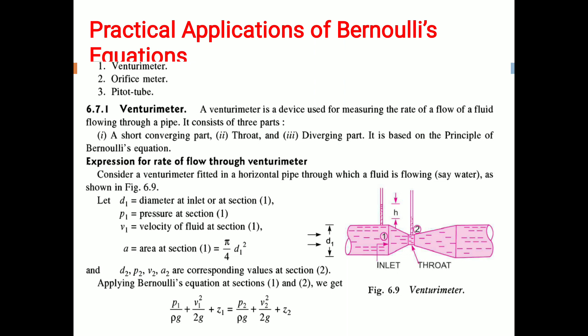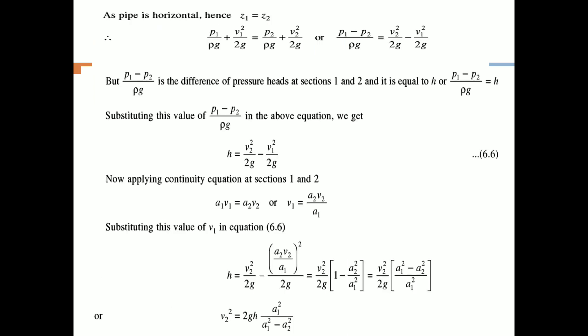Applying Bernoulli's equation at sections 1 and 2: P1 by rho G plus V1 squared by 2G plus Z1 equals P2 by rho G plus V2 squared by 2G plus Z2. Since the pipe is horizontal, Z1 equals Z2. Therefore, P1 minus P2 divided by rho G equals V2 squared by 2G minus V1 squared by 2G.